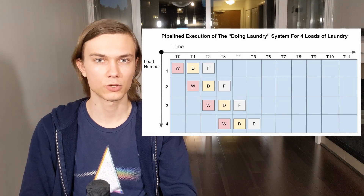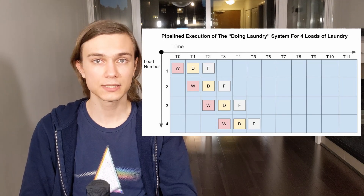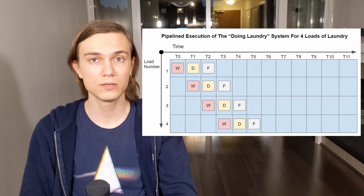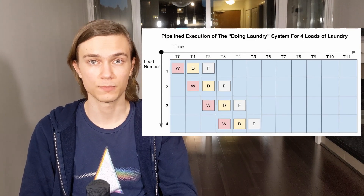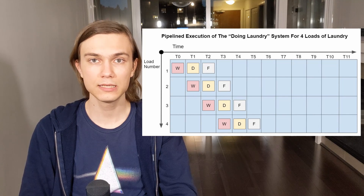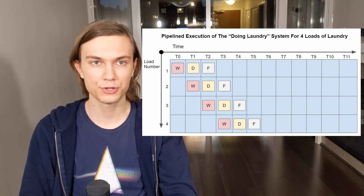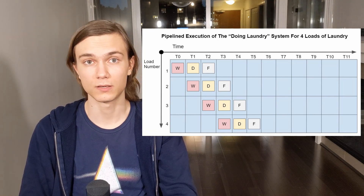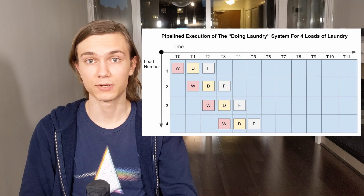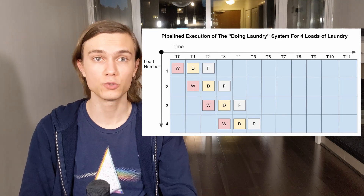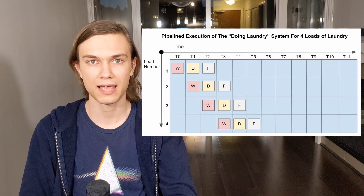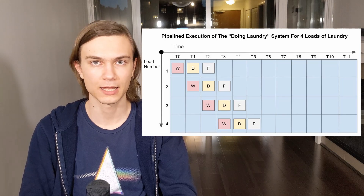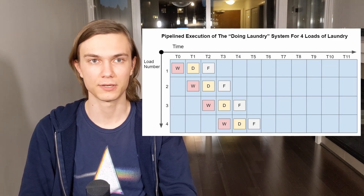A quick lesson on terminology. At times t0 and t1, not every stage is being run — that is the startup period of the pipeline execution. At times t2 and t3, every single stage is being run — this is the steady state period of the pipeline execution. Lastly, at times t4 and t5, again we do not have every single stage running — this is the pipeline draining period.